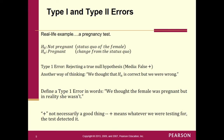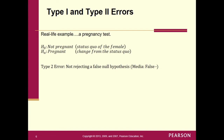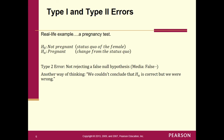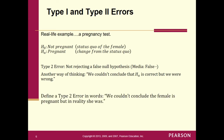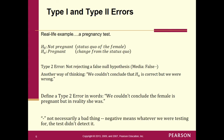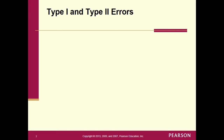A Type 2 error is not rejecting a false null — the media calls that a false negative. We couldn't conclude HA is correct, but we were wrong. In this context: the test could not pick up that she was pregnant — it had inconclusive evidence. When you say 'do not reject the null,' you're basically saying we can't determine if she's pregnant or not. So we couldn't conclude the female was pregnant, but in reality she really was.